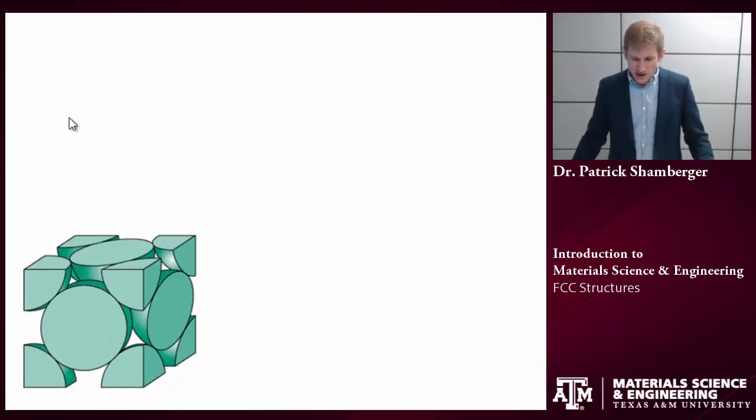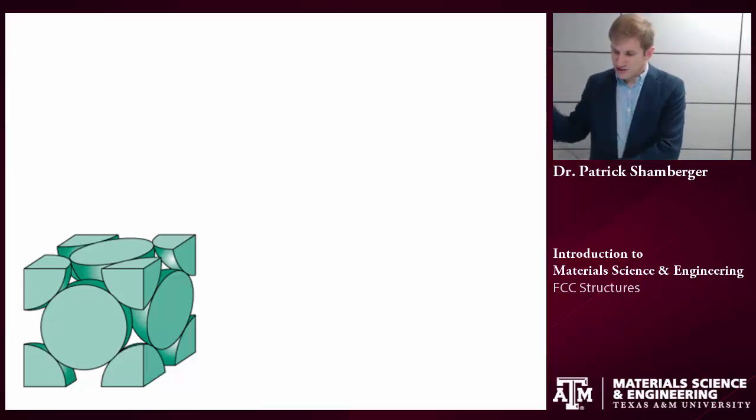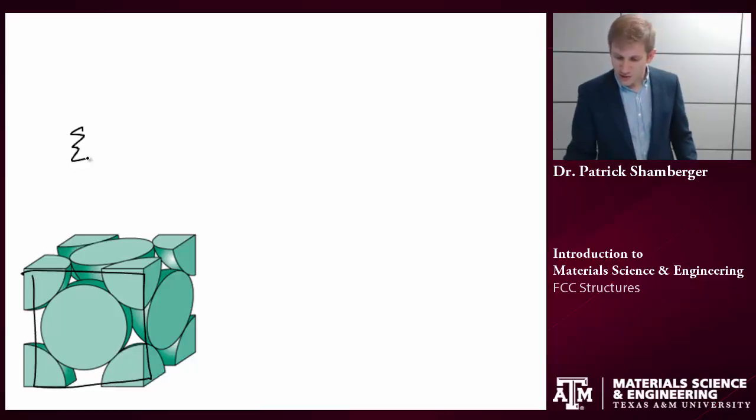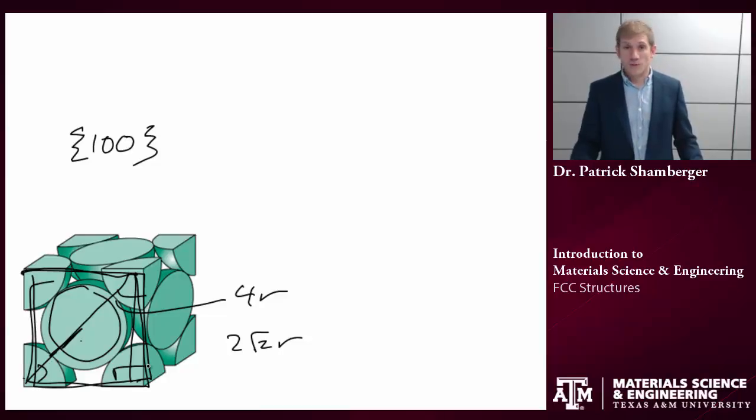Let's try talking about different planes. Some of these planes are really easy to see. For example, the 100 family of planes is essentially what we see when we're cutting the faces of the cube. There's an atom at each of the corners and one atom in the center. If I were going to calculate relevant lengths, this being the radius of the sphere there, the hypotenuse is 4r. The side here is going to be 2 square root of 2r because it's a 45-45-90 degree triangle. From these dimensions, you can calculate planar densities of this plane.